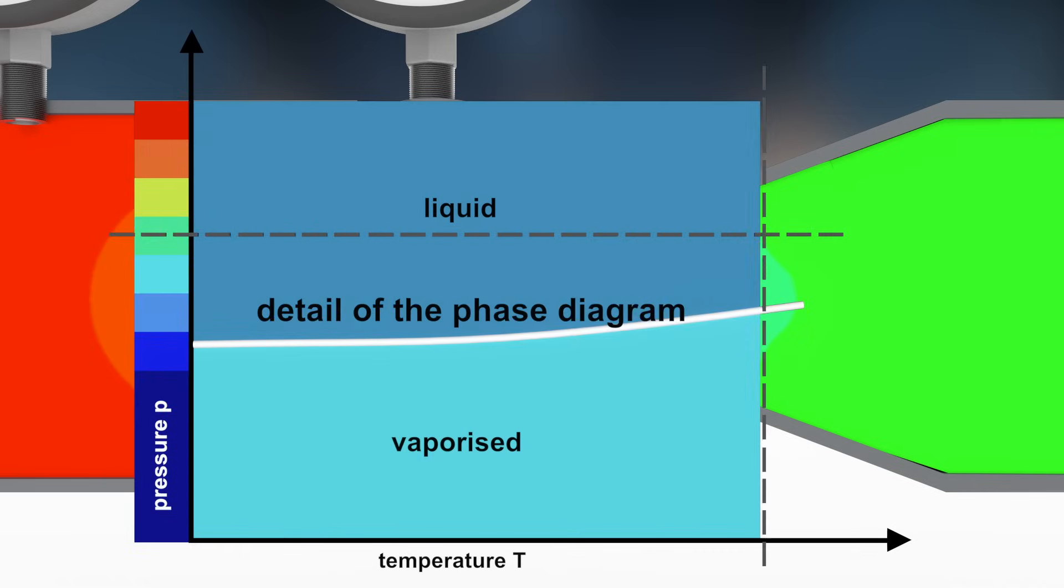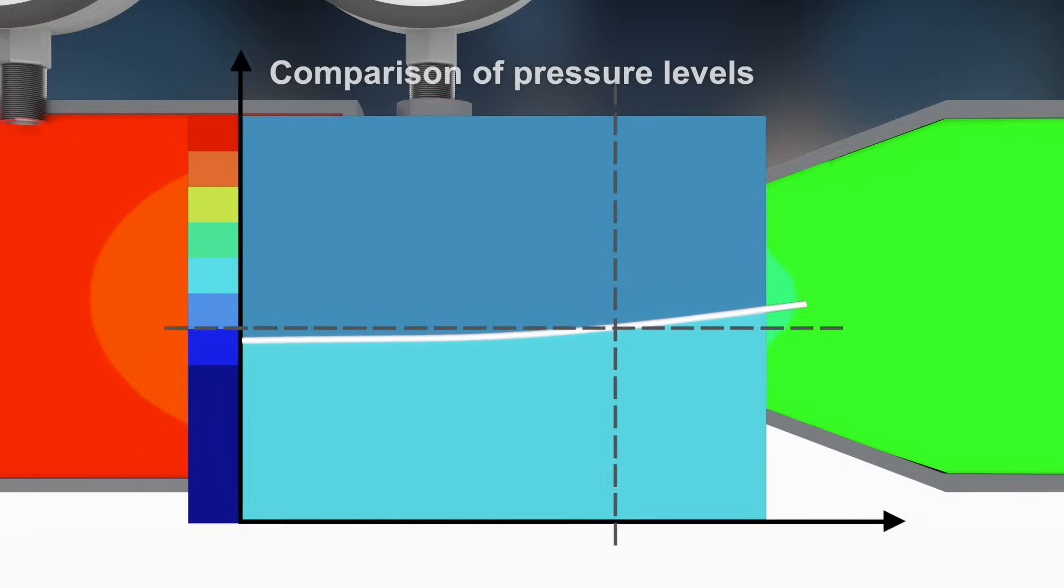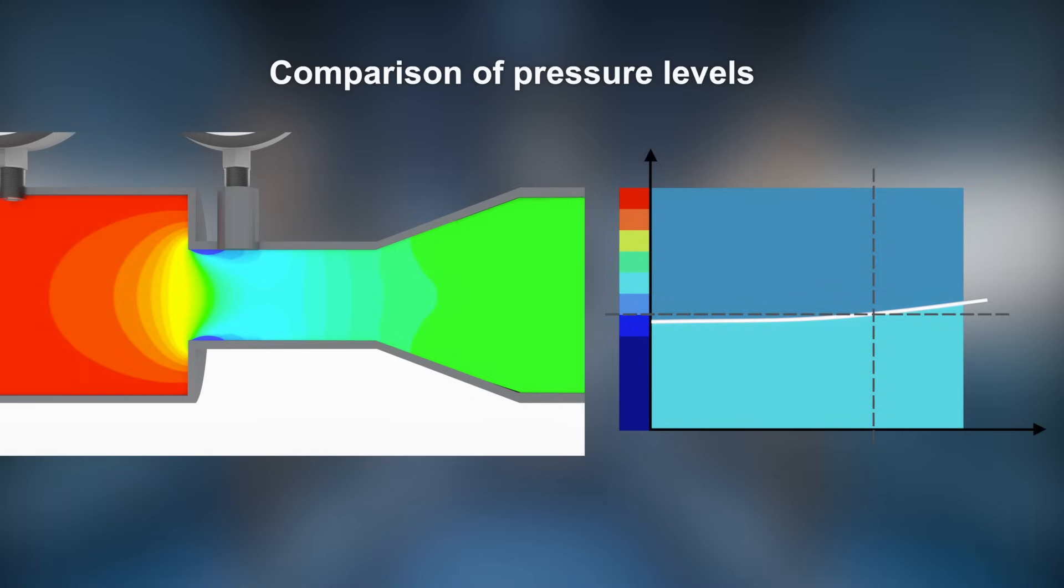We show a detail of a phase diagram of water which allows to analyze the situation in the narrow pipe section. The temperature of a flowing water can be 20 degrees Celsius, which is a vertical line in the diagram. It crosses the vapor pressure line at an absolute pressure of 2300 Pa. As long as the pressure is higher, water remains liquid. If the absolute pressure decreases below 2300 Pa, water evaporates. The colors in the left visualization correspond to the colors indicated on the vertical axis of a phase diagram on the right.